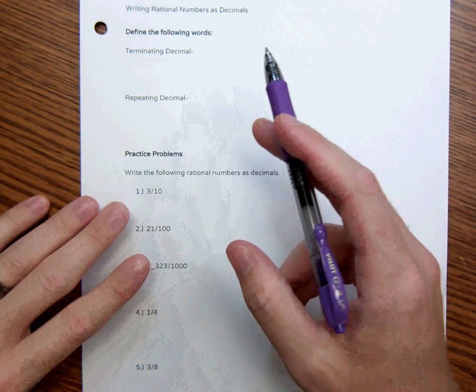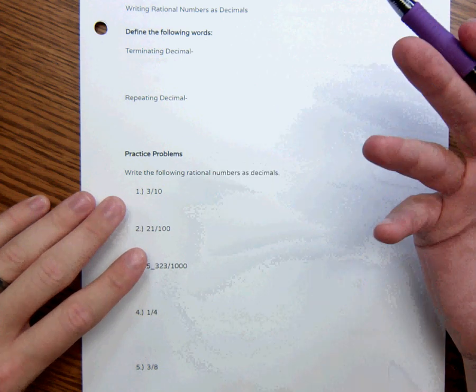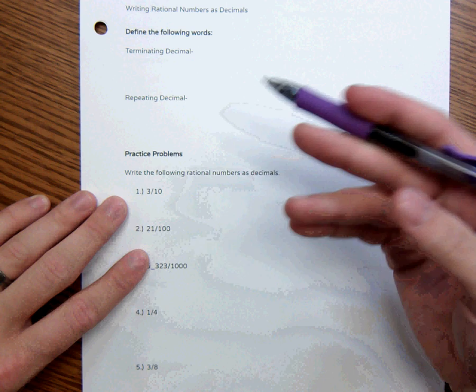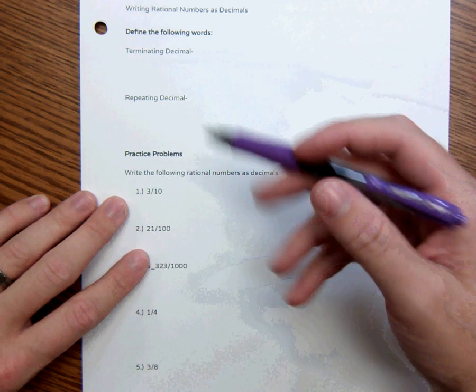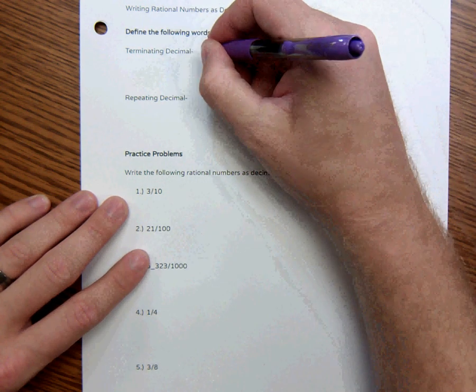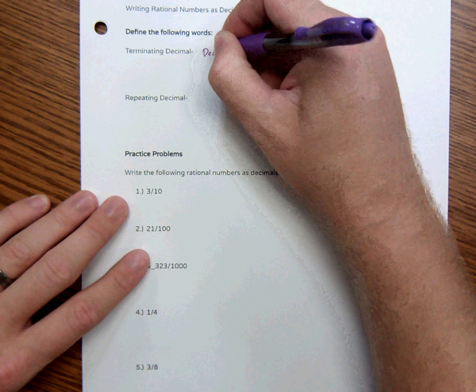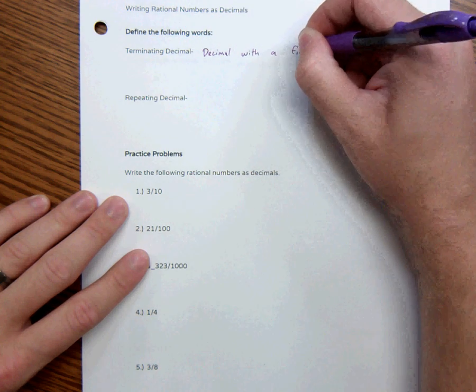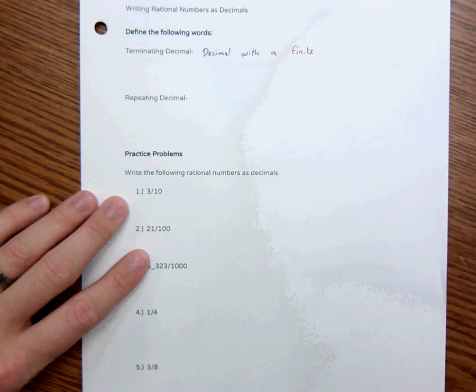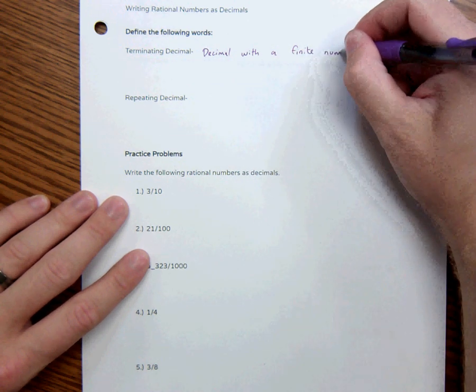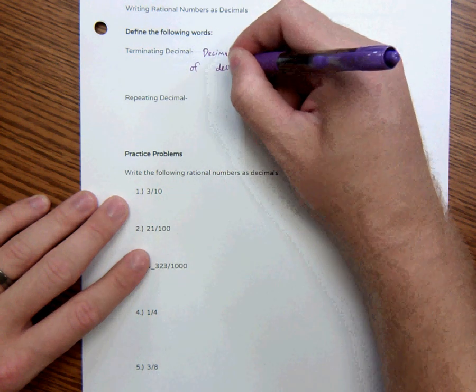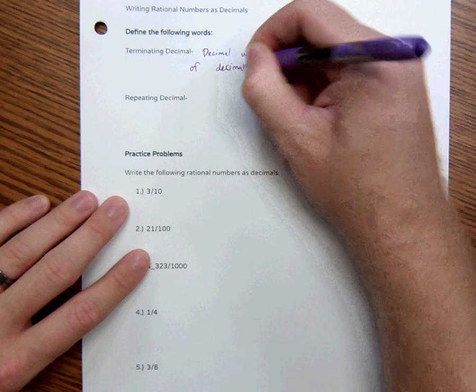Basically, right now we're learning how to write rational numbers, the fractions that we did the other day, as decimals. So there's two types of decimals. Decimals that terminate, and this is just a decimal with a finite number of decimal places.